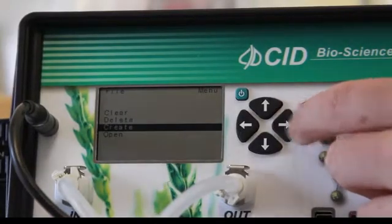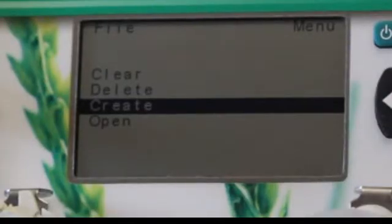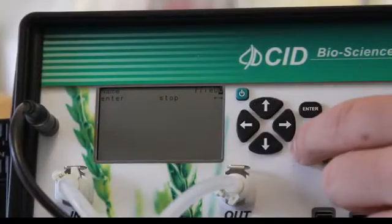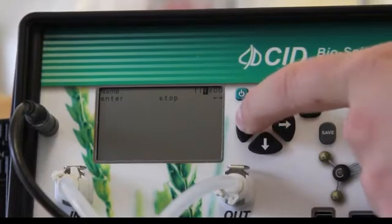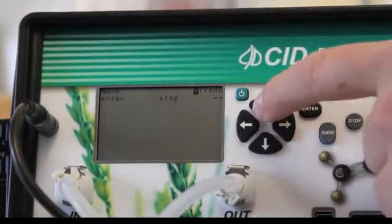Use the right arrow to open the File menu. Make sure the Create option is selected and press the right arrow once again to open the file creation menu. This is where we type in a file name for the CI900 to write measurements.